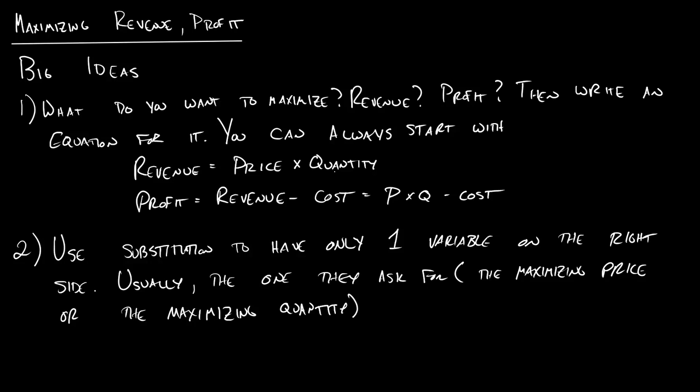All right, everybody. Today we get to combine some ideas that we've had from earlier in the book. Specifically we're going to be looking at revenue and profit and how to maximize those two things. So we're kind of combining two old concepts.